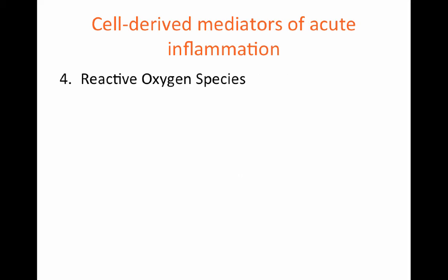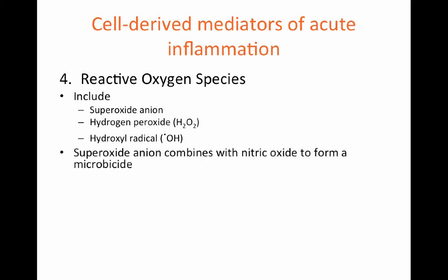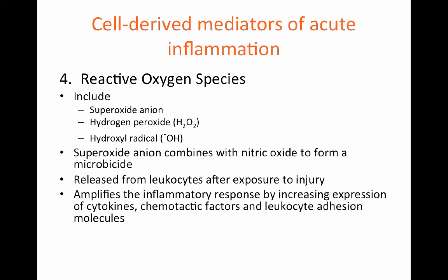Reactive oxygen species are the fourth component of the cell-derived mediators. They include superoxide anion, hydrogen peroxide, and hydroxyl radical. Superoxide anion combines with nitric oxide to form a microbicidal product. Reactive oxygen species, or ROS, are released from leukocytes after exposure to an injury. They amplify the inflammatory response by increasing the expression of cytokines, chemotactic factors, and leukocyte adhesion molecules. In addition, they can cause damage to normal host tissues.